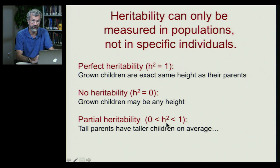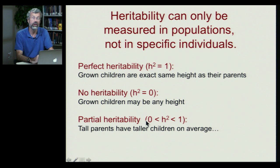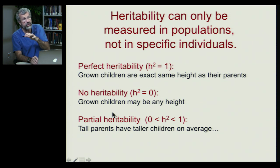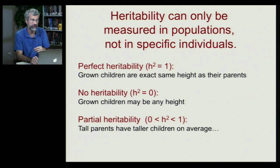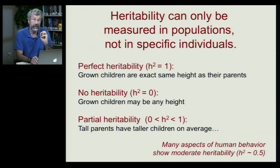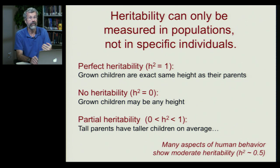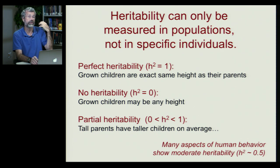The term H-squared is our algebraic representation for heritability, somewhere between one (perfect) and zero (none at all). Partial heritability means that tall parents have taller children on average, but not exactly the same height as their parents. When we look at behavioral traits, we find — often quite surprisingly — a moderate degree of heritability. About 50% in some cases of our behavior comes from the genetics of our parents.